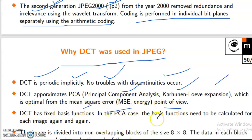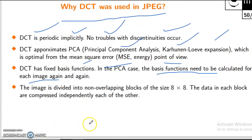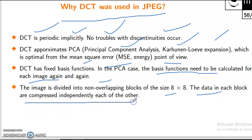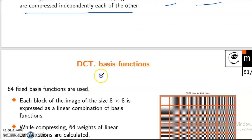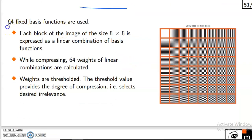In the PCA case, the basis functions need to be calculated for each image again and again. The image is divided into non-overlapping blocks of size 8×8. The data in each block are compressed independently of each other. 64 fixed basis functions are used. Each block of the image of size 8×8 is expressed as a linear combination of the basis functions.